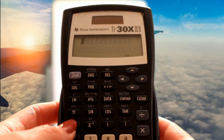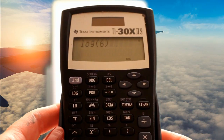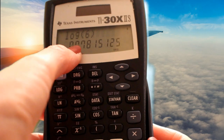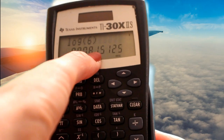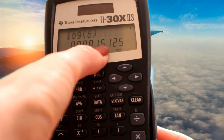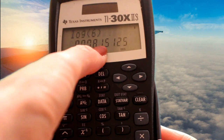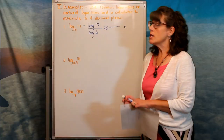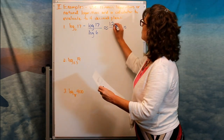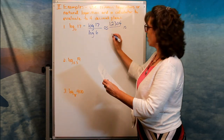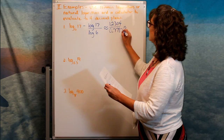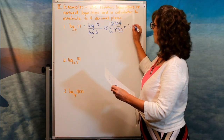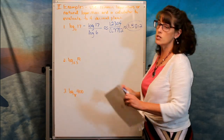Now I do log of 6, hit enter, and I get 0.77815125. Four decimal places: 0.7782, because the number to the right is 5 or above, so it rounds up. So I write 1.2304 on the numerator and 0.7782 on the denominator. When I divide 1.2304 by 0.7782, I get approximately 1.5812, rounded to four decimal places.